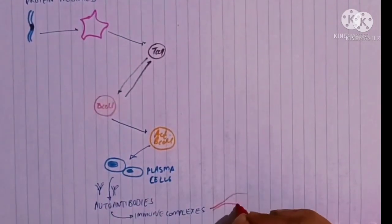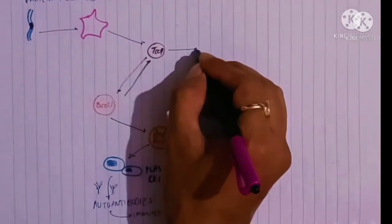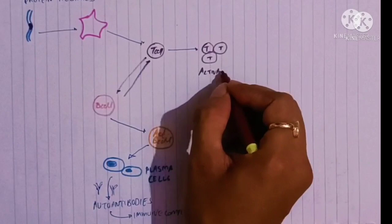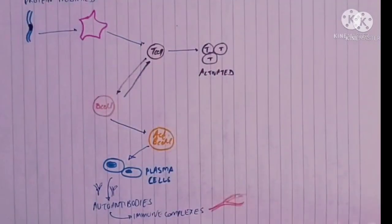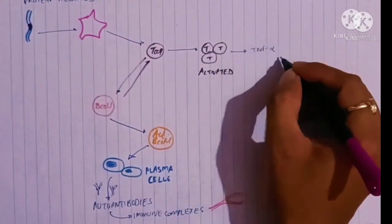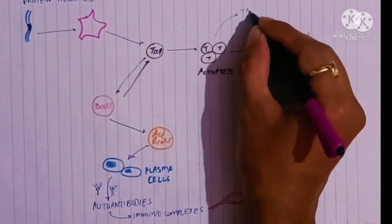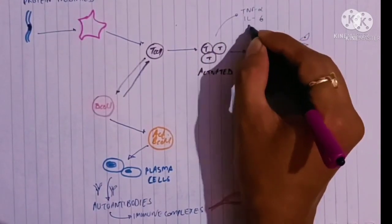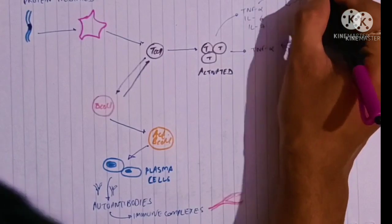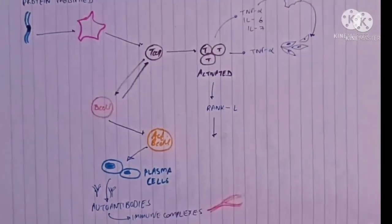The autoantibodies form immune complexes, which get deposited in blood vessels, leading to vasculitis in rheumatoid arthritis. The activated T cells also lead to the formation of TNF-alpha, which stimulates fibroblasts. TNF-alpha, IL-6, and IL-7 are released and stimulate macrophages.